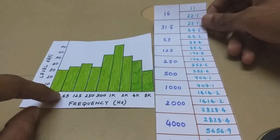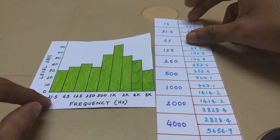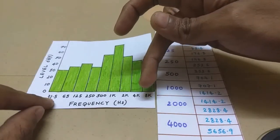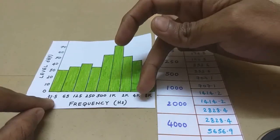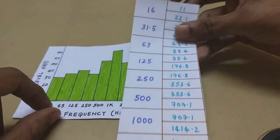Alright, now octave band is a constant percentage band meaning the bandwidth is proportional to the center frequency. So if the center frequency is really large, the bandwidth is also large.